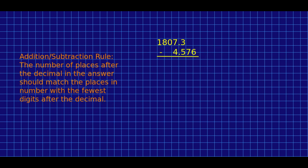The addition and subtraction rule is the one where I find students tend to get more confused. So it says that the number of places after the decimal in the answer should match the places in the number with the fewest digits after the decimal. Now notice, we're no longer talking about significant figures. We're talking about places after the decimal.